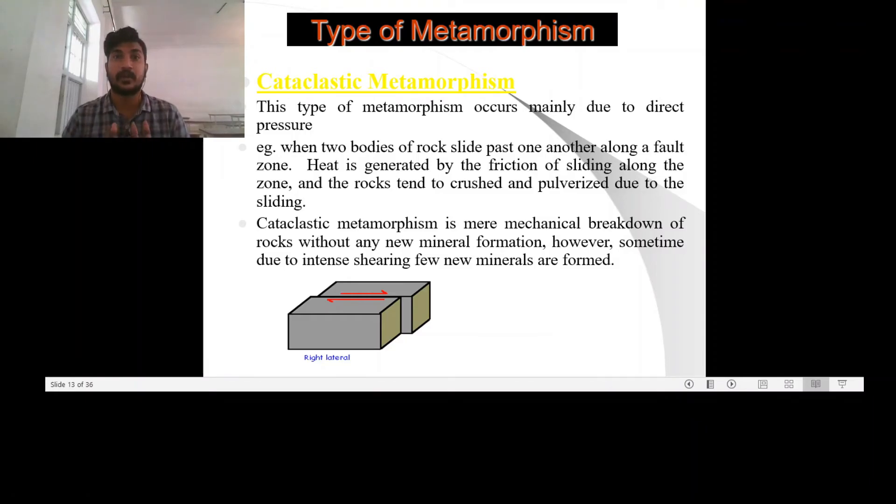The crushed rocks in fault zones are known as fault breccias which consist of angular fragments of country rock in a matrix of crushed or powdered or pulverized rock which is cemented by quartz or calcite.